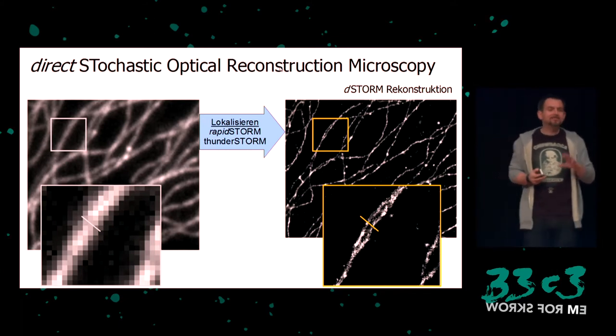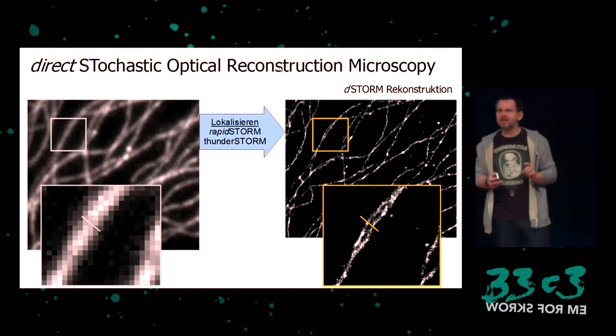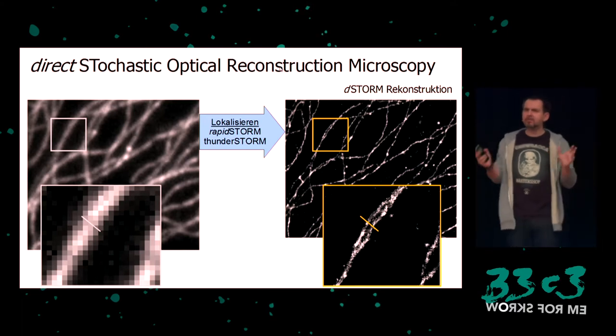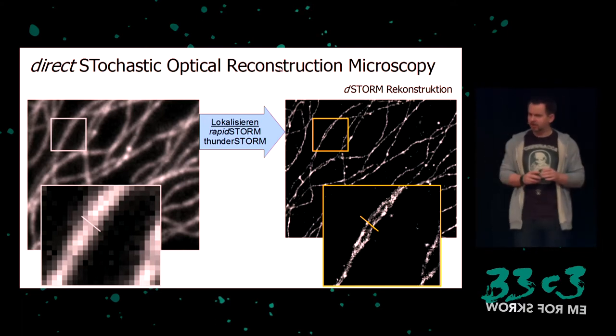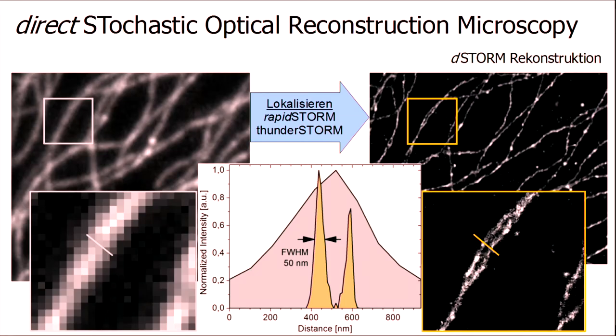Just Google for localization software — ThunderStorm. With ThunderStorm alone, you get different results, but if you reconstruct it, you can see that it's not just one microtubule but there are two. And if you can really distinguish the two, that made the biologist in me very happy.